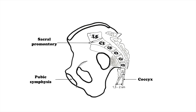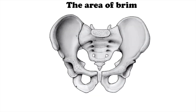There are four differentiated planes in the small pelvic cavity: the area of brim, the pelvic plane of greatest dimensions, the third parallel pelvic plane, and the area of pelvic outlet.